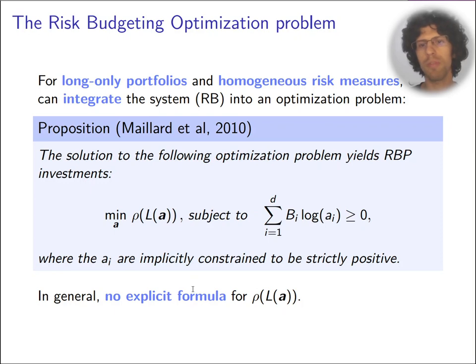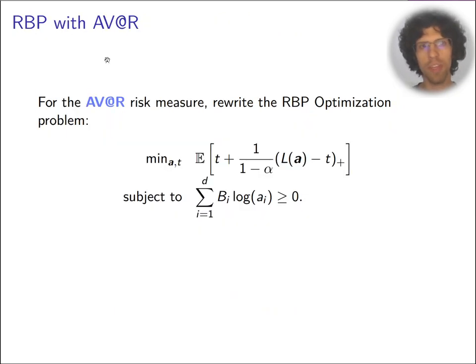In general there's no explicit formula for the risk of the random losses. The main issue is that the random losses can be very tricky to deal with given the investment decision a. To fix our problem we are going to choose the average value at risk as the risk measure. What we're going to do to make this problem more concrete is to sample future returns to evaluate this expectation.